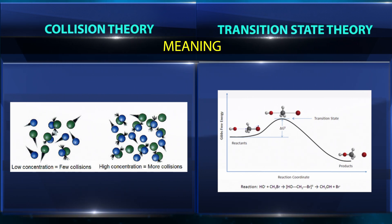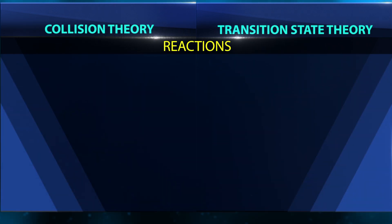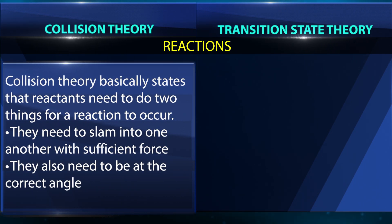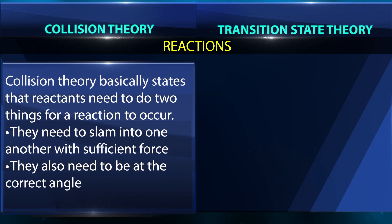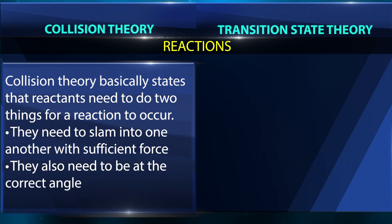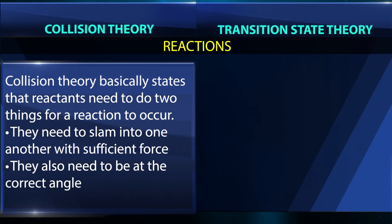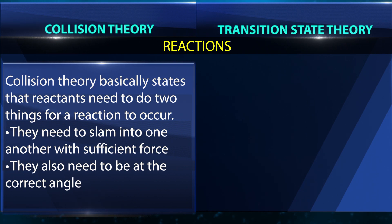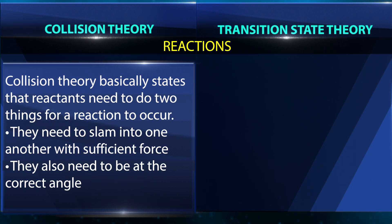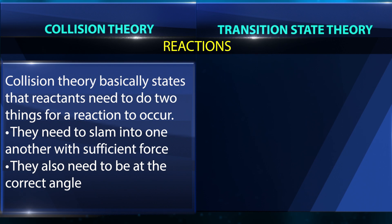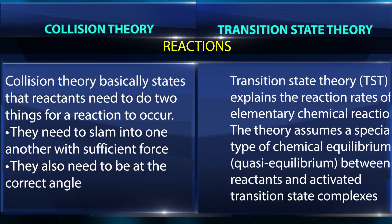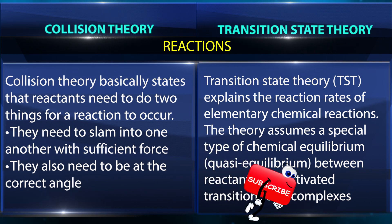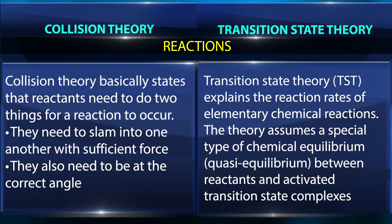Collision theory basically states that reactants need to do two things for a reaction to occur: they need to slam into one another with sufficient force, and they also need to be at the correct angle. Transition state theory explains the reaction rates of elementary chemical reactions.